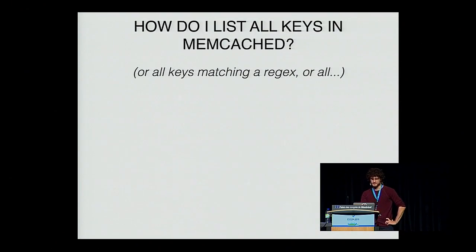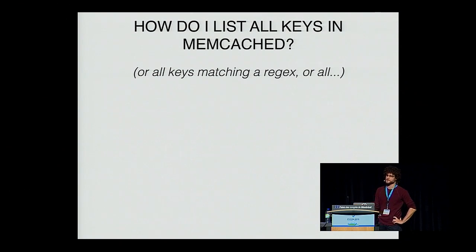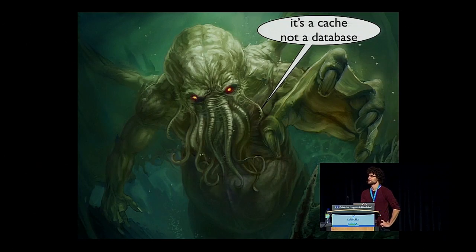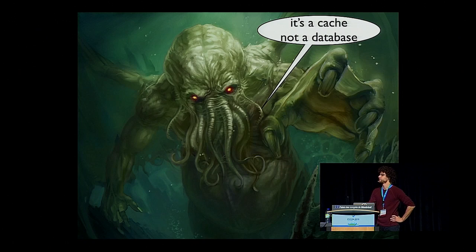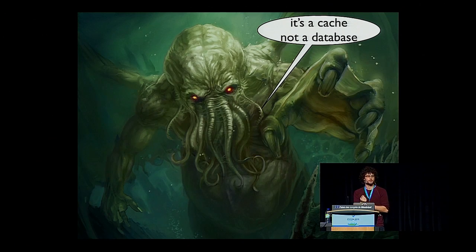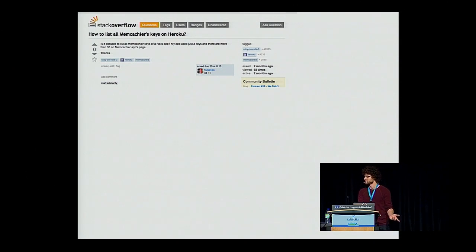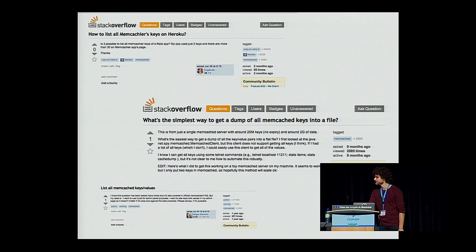A common question is: how do I list all keys in memcached, or all keys matching a regex, or starting with a certain prefix? The answer is: you don't. It's a cache, not a database — you can't query it. If your code needs to do any filtering or querying on keys stored in memcached, you're using memcached wrong. You want to use a document store or a database for that. It's a common misconception — you see it often: "How to list all memcached keys on Heroku," "What's the simplest way to get a dump of memcached keys in a file." You can't do it.